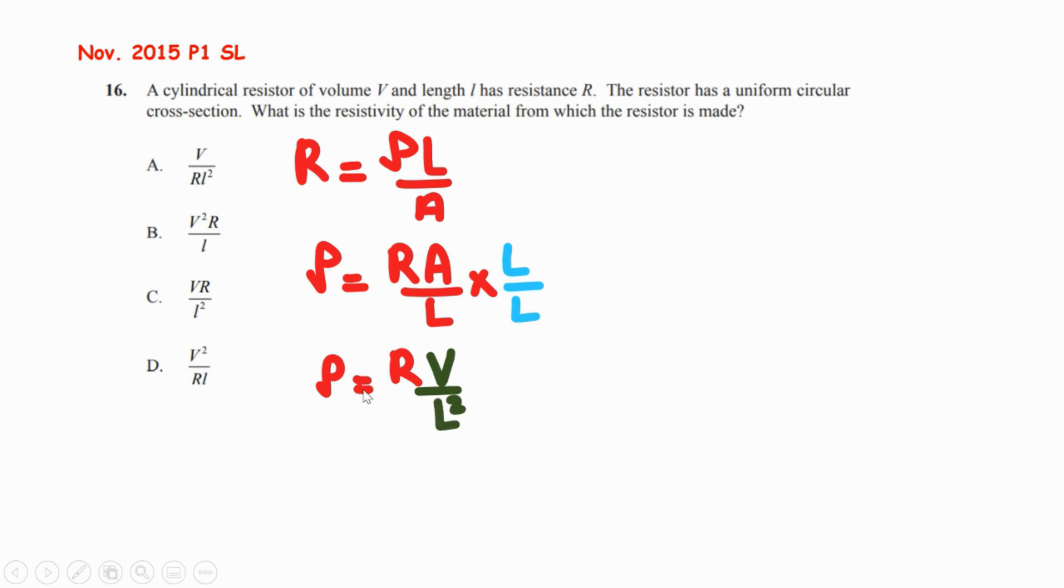Now the formula, which was clear, depended on the cross-sectional area, resistance, and length. Now it depends on resistance, volume, and L squared. So the correct answer is C.